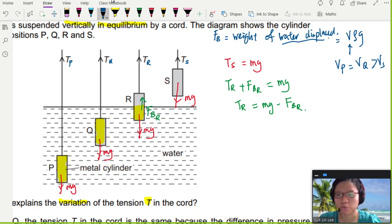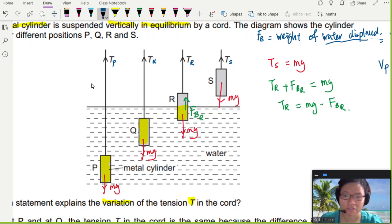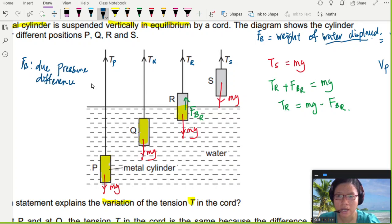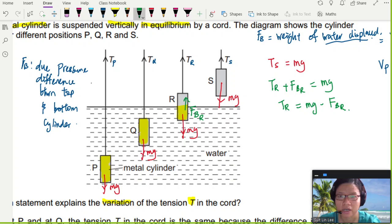You can also think about this buoyancy force is due to pressure difference. So it's not about the absolute pressure of the metal cylinder, but the buoyancy force is due to pressure difference between the top and the bottom of the cylinder. So as long as the cylinder has the same dimensions, it should have the same buoyancy force. So in this case, I would say that FB at Q and FB at position P is the same.